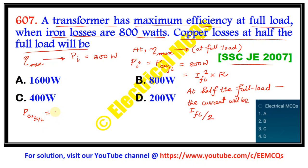equal to (I_fl/2) squared times R. This is equal to 1/4 times I_fl squared R. Putting the value of I_fl squared R, which is basically 800, we get 1/4 times 800.